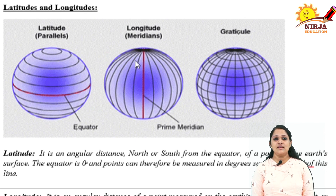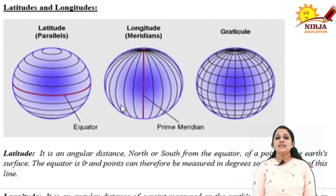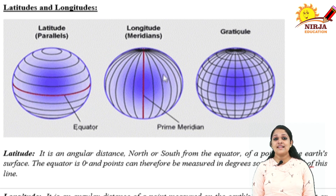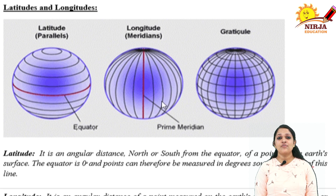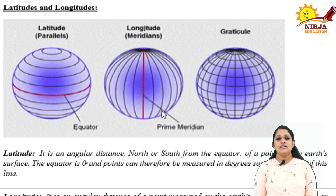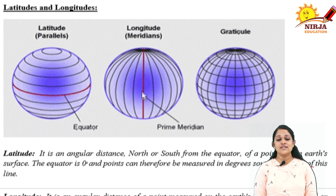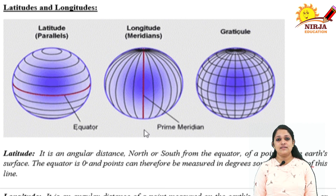Now here you can see longitudes. These lines are vertical. Longitude lines run from north to south. This is called the prime meridian. This line divides the globe into the eastern and western hemisphere, and it is also marked at 0 degree.